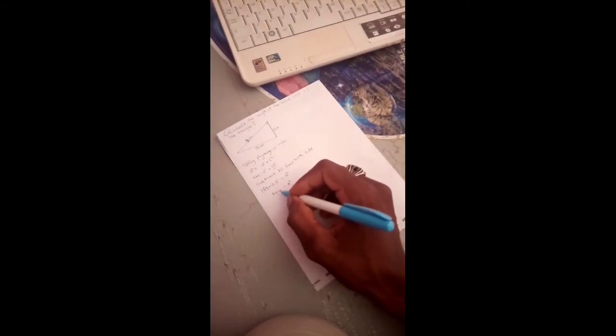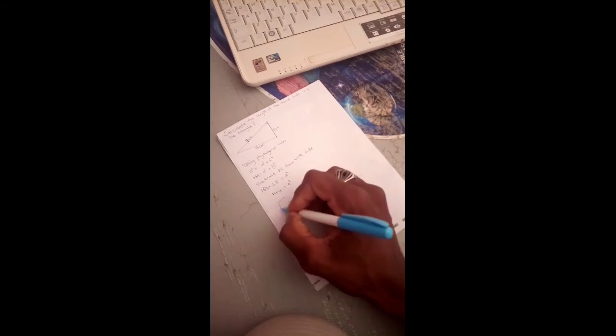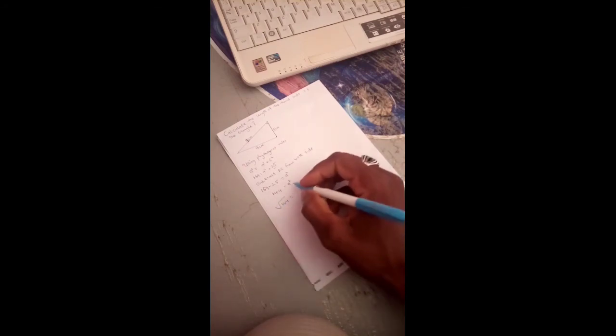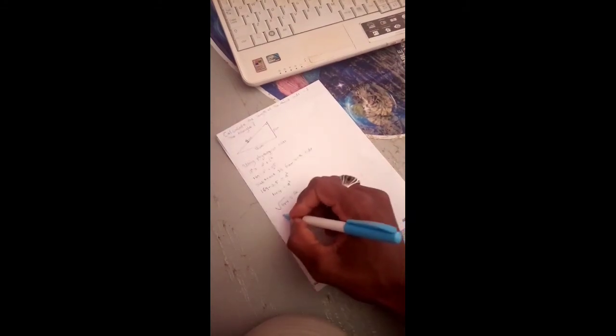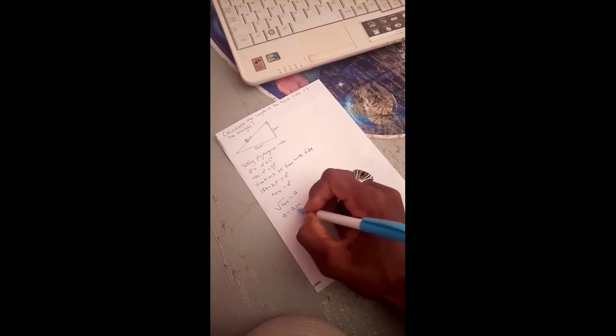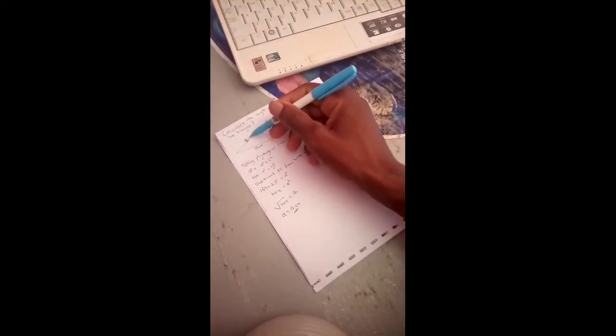The square root of 144 equals to 12. So our a equals to 12 centimeters. That is our final answer, so here is 12 centimeters.